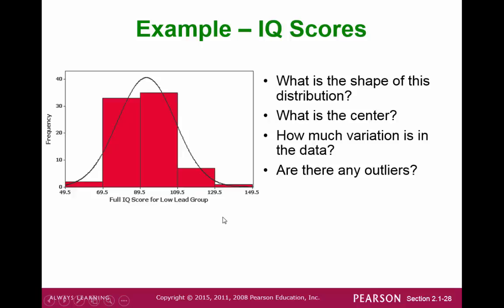Our example produced something like that. The shape seems like it could be symmetric or bell shaped. The center might be around 90. The spread might be between 90 and 110. There might be some outliers over here, but it looks like the data set seems pretty connected, so maybe there are no outliers.